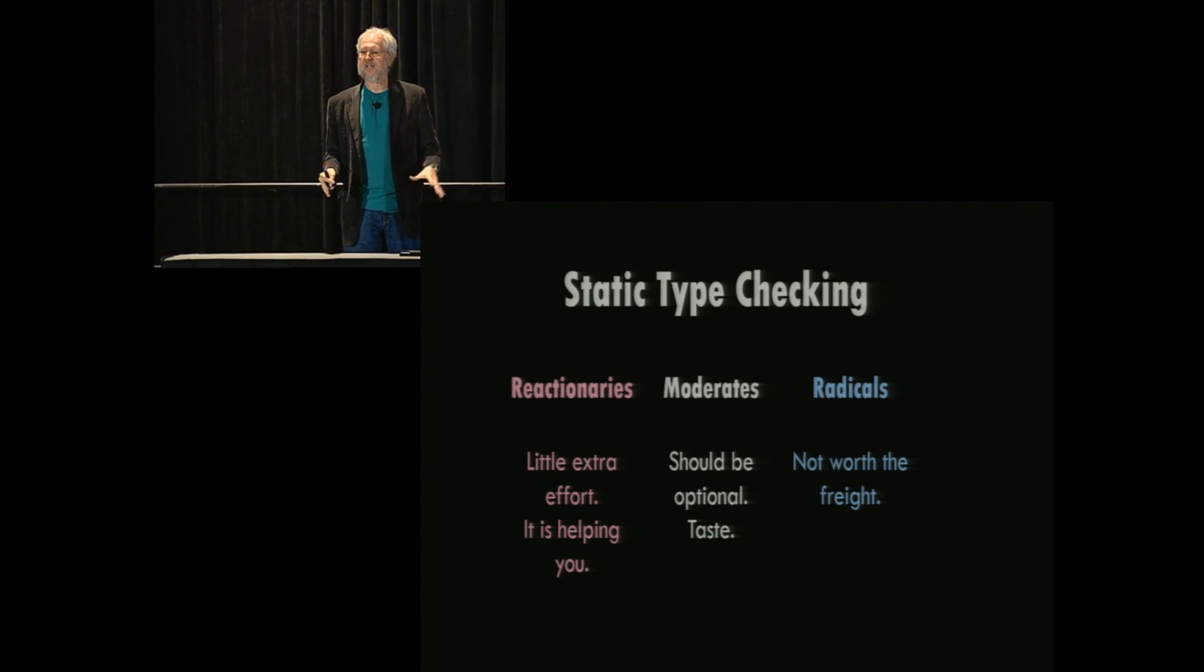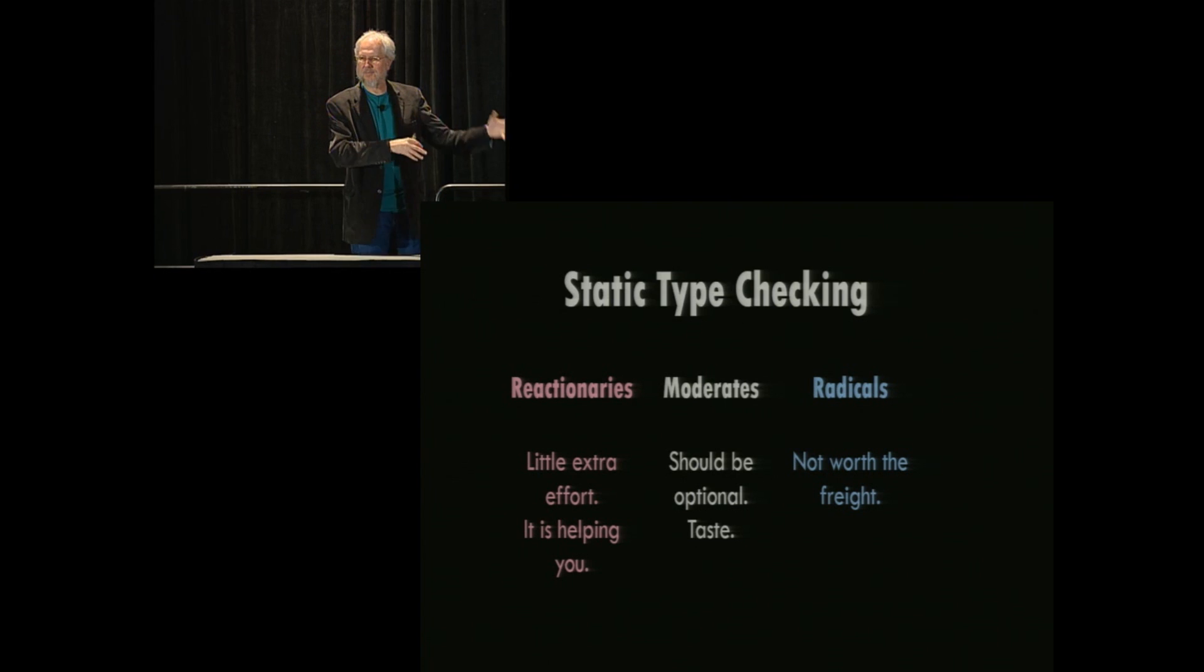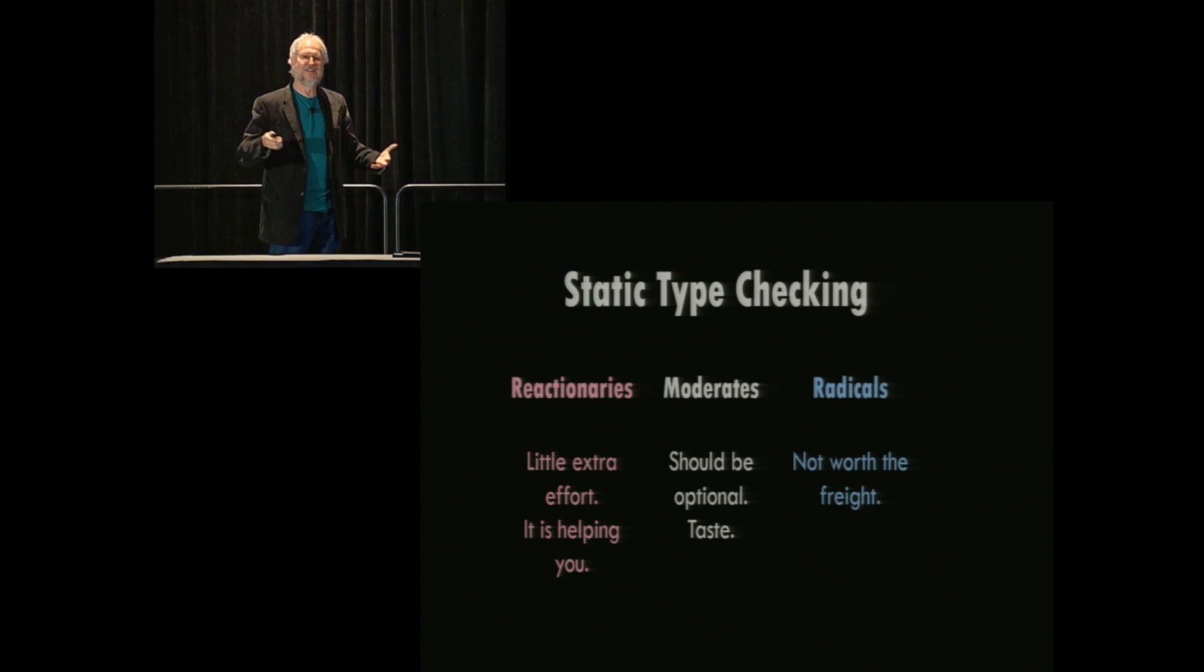The reactionaries cannot understand that. They think that the maintenance of type information is very little effort. That it's work that you're going to do anyway, but it's unavoidable. So as long as you're doing it, get the benefit from it. They don't understand that you don't have to do it. And you cannot tell them that argument. They will not understand it. They think it's there to help you. And they think there's something wrong with you for refusing that help. Then you've got the moderates, as always, who are in the middle saying, it should be optional. It's a matter of taste. Anytime you get someone talking about technology and saying it's a matter of taste, they're wrong. It's not about taste. It's about technology. And they're right answers to this stuff, actually. It's not a choice. It's real.